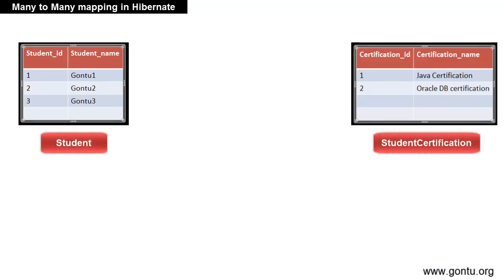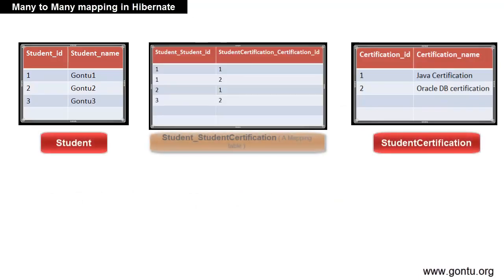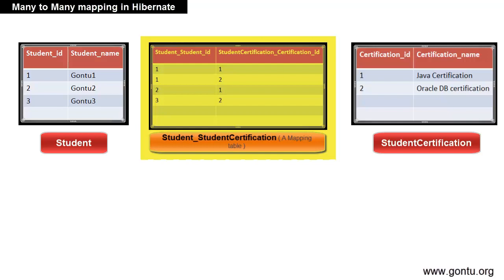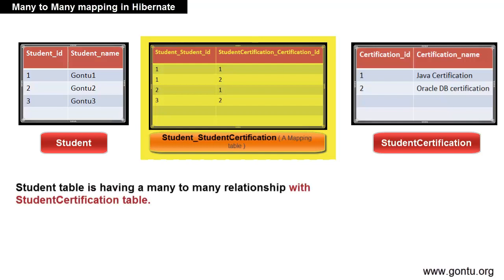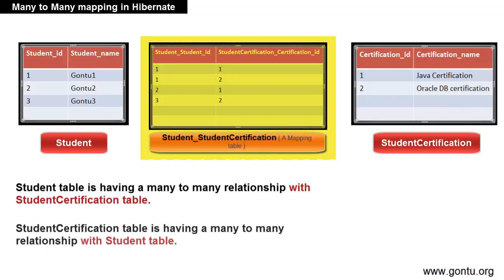For such a relationship, you will need a separate mapping table which has all the mapping information. Only by looking at this third table, you'll be able to know which record of table A is linked to which record of table B. Say you have two tables in the database — student and student certification — and a mapping table containing all information about how these two tables are linked. Many records in the student table are linked to many records in the student certification table, so they have a many-to-many relationship with each other.